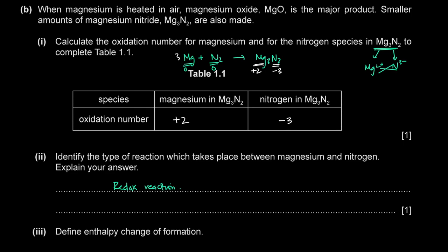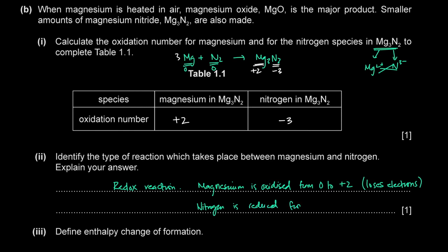We have to justify why it's a redox reaction. Magnesium is oxidized from 0 to +2. You can refer to the changes in oxidation number or mention that magnesium loses electrons, hence it's oxidized. Nitrogen is reduced from 0 to −3 — a decrease in oxidation number, becoming more negative, or gaining electrons. You can explain this in terms of oxidation numbers or electron transfer.